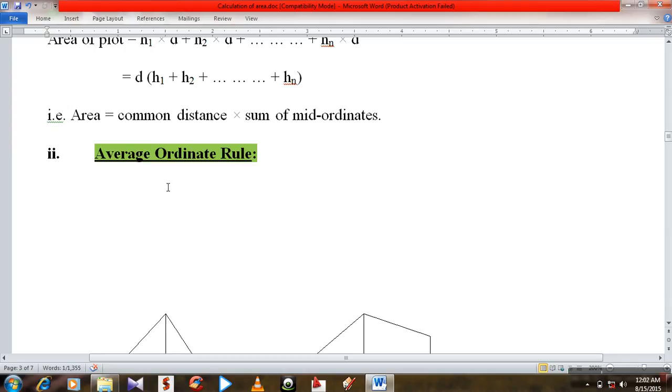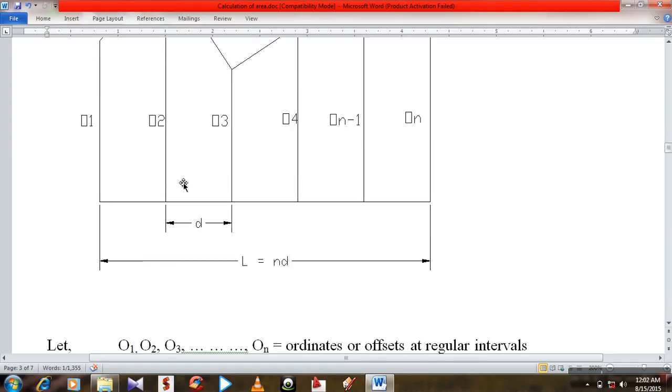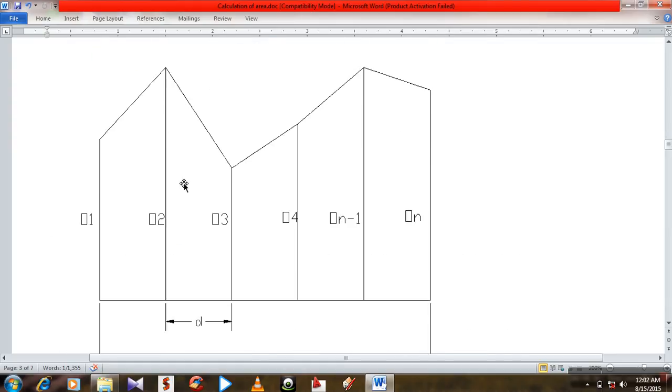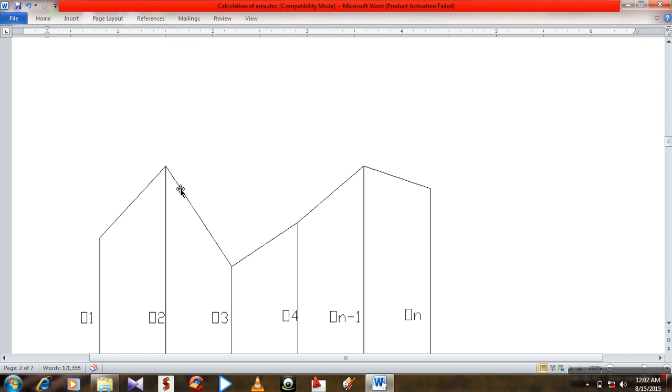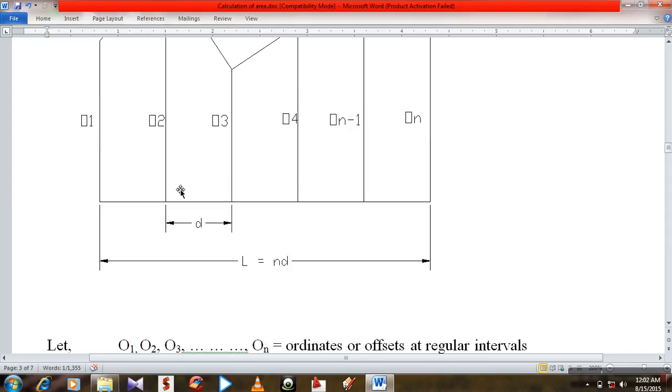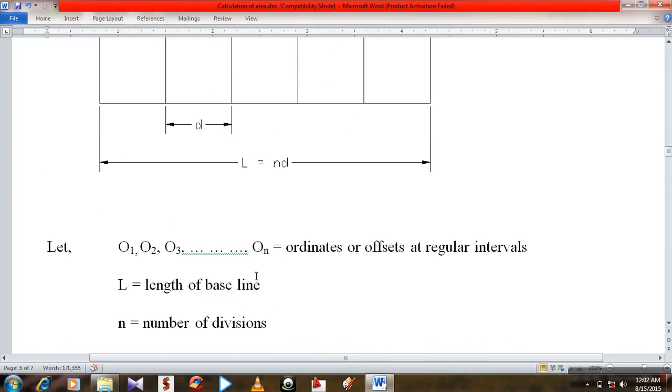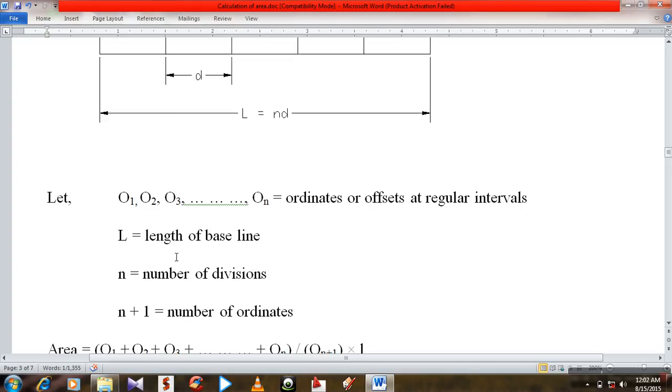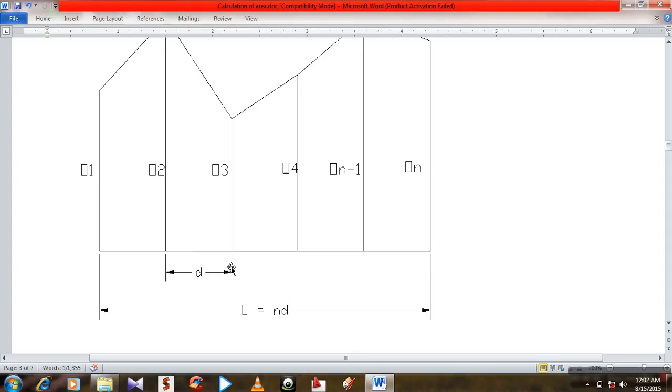Let's discuss average ordinate rule. The previous figure, like mid-ordinate rule. Let O1, O2, O3, O1 ordinates are offsets at regular intervals.